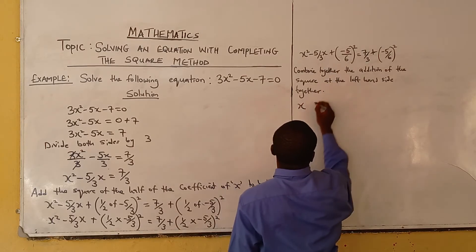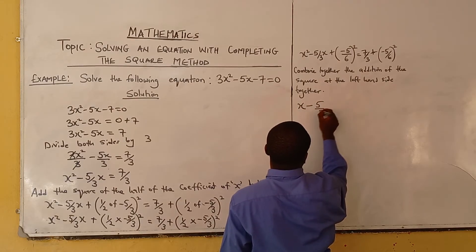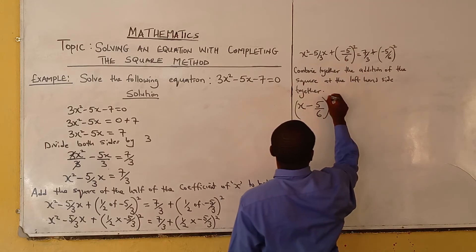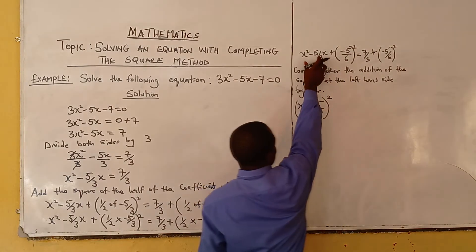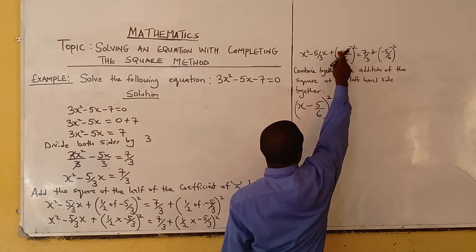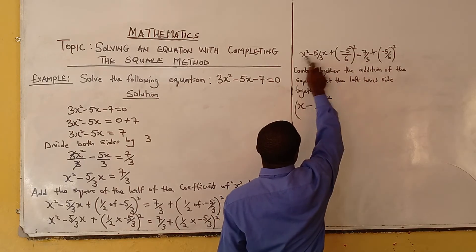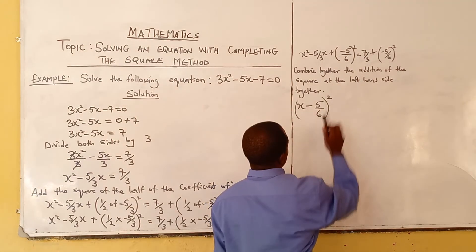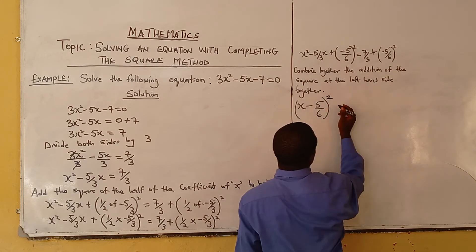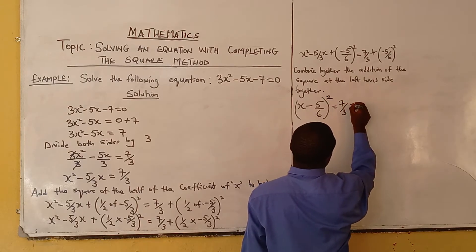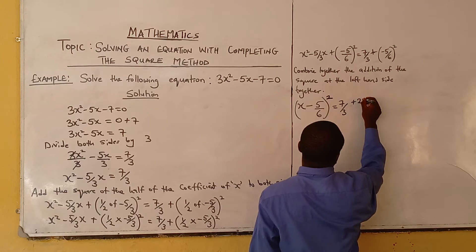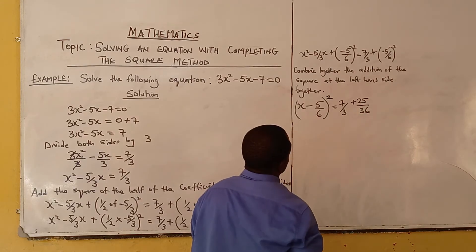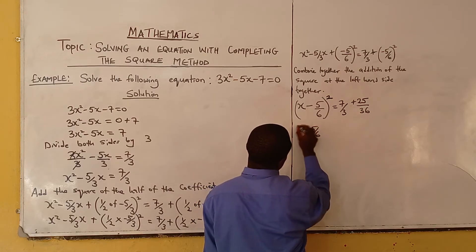Now we combine together the left-hand side into a perfect square. Since we have x and minus 5/6, we bring them together. Because there is a negative, it becomes x minus 5/6, and since they are squared, we write it as (x minus 5/6)². So the left-hand side is (x − 5/6)². On the right, minus 5 squared is plus 25, and 6 squared is 36, giving us 7/3 plus 25/36.